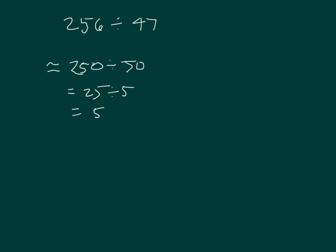Let's use our estimated quotient to be able to solve 256 divided by 47. Let's try 5. 5 times 47 is 235. When we subtract that, we get 21 as our remainder.